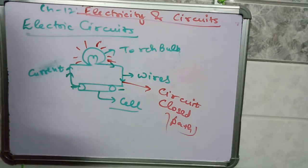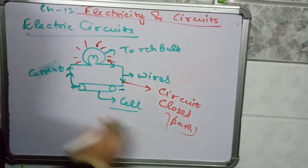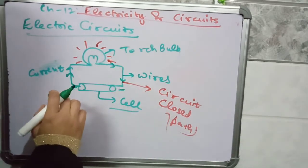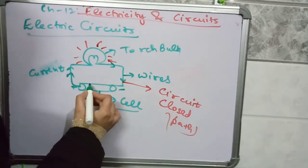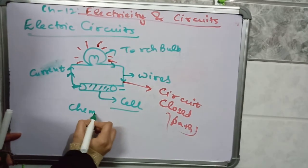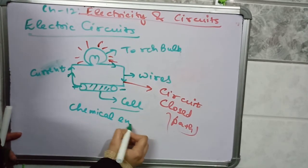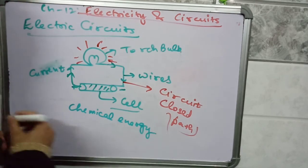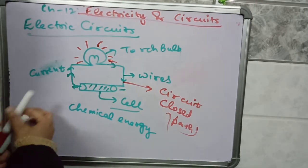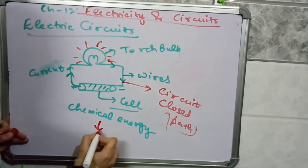So electric circuits is a closed path in which current can flow. And here in this cell, chemical energy is present. This chemical energy of the cell or battery is converting into light energy.